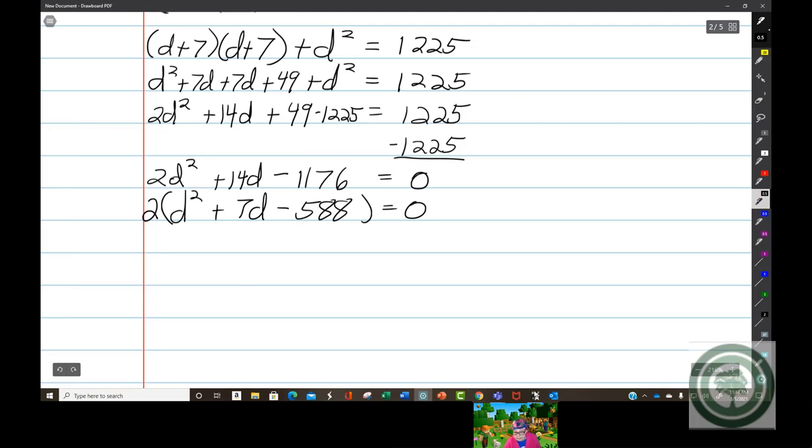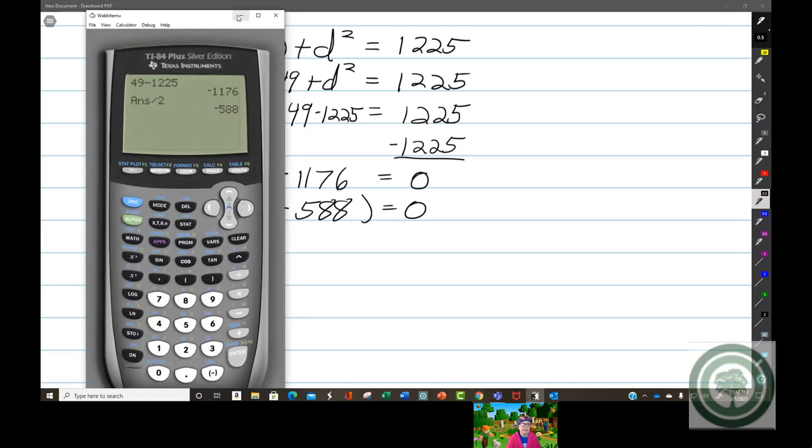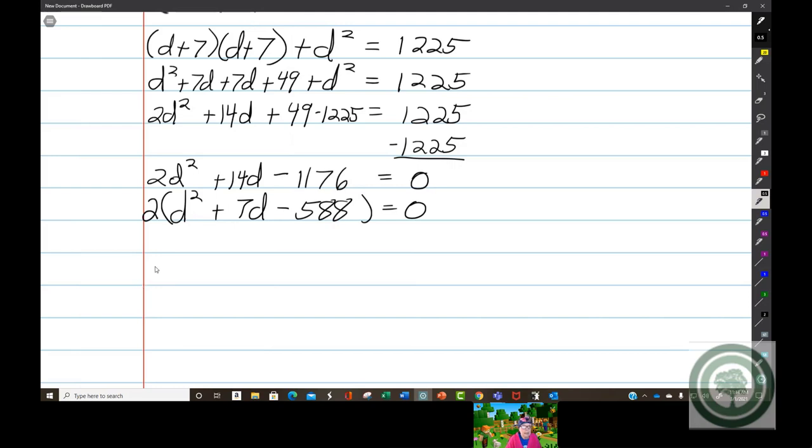So I'll pull out a 2 as the GCF. Then because it's an equation, I divide by 2 and divide by 2. We're going to have d squared plus 7d minus 588 equals 0.